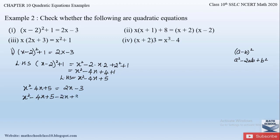There is only one x² term, so we write x². For the x terms: −4x − 2x = −6x. For the constants: 5 + 3 = 8. So the equation becomes x² − 6x + 8 = 0.